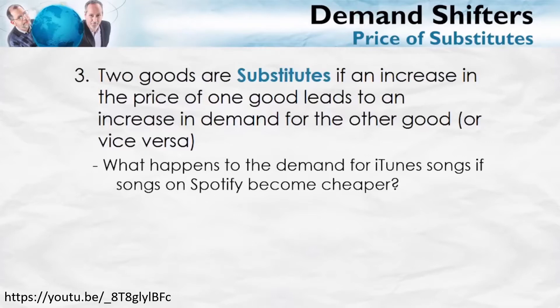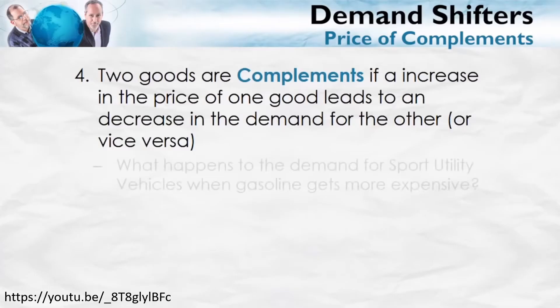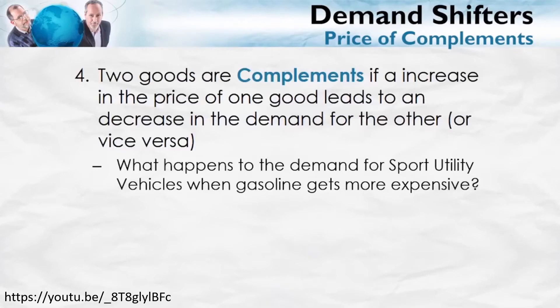Another important demand shifter is the price of complements. Complements are goods which tend to go together — think of hot dogs and hot dog buns. Two goods are complements if an increase in the price of one leads to a decrease in demand for the other. If the price of hot dogs goes up, fewer people buy hot dogs, so demand for hot dog buns decreases as well. Conversely, if the price of hot dog buns goes down, demand for hot dogs will go up. Similarly, when gasoline gets more expensive, that decreases the demand for sport utility vehicles.